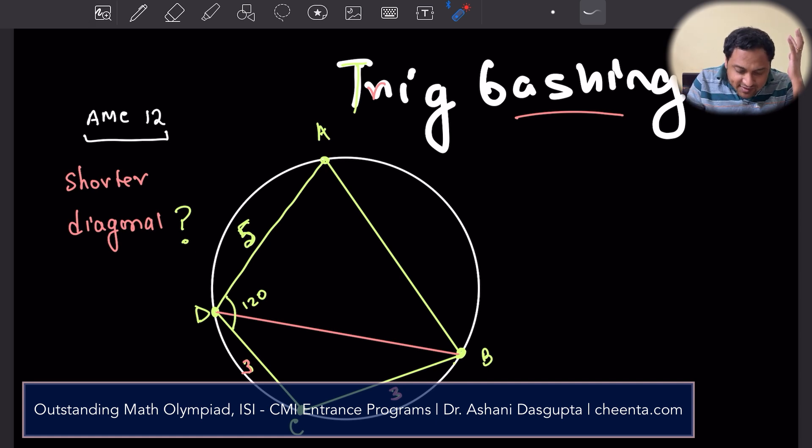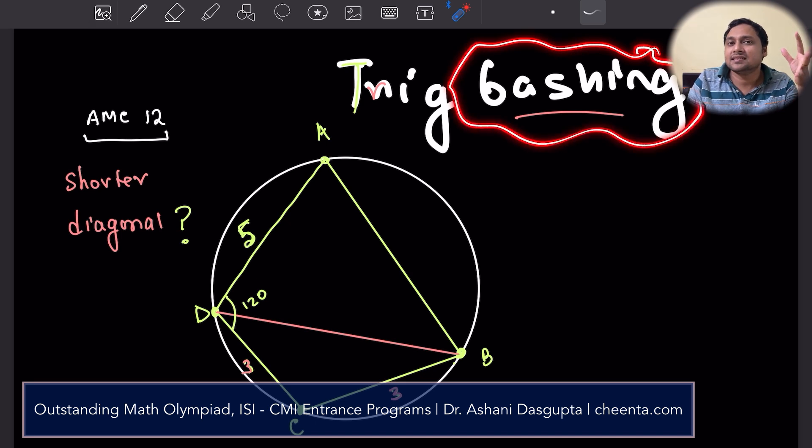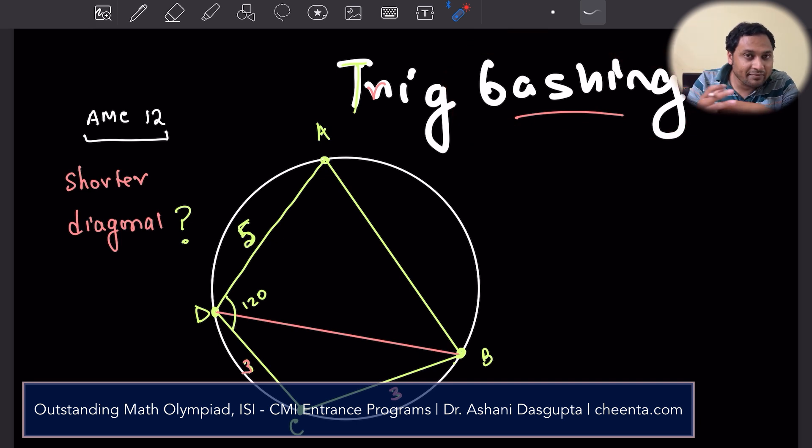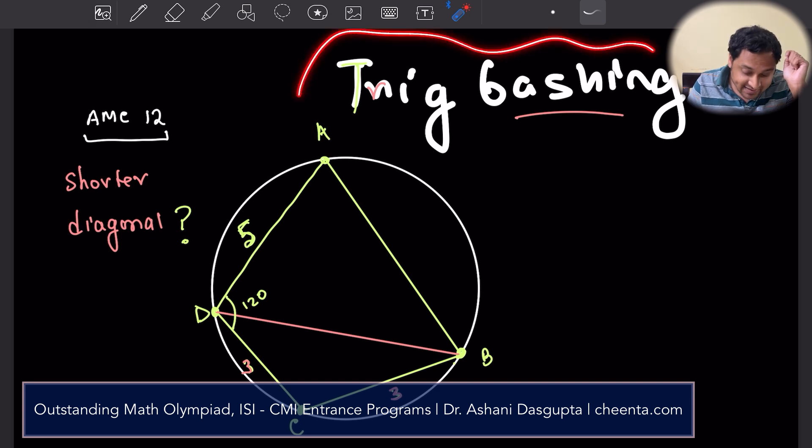Now, whenever you see the word bashing, what it essentially means is you have to use tools and formulas and techniques from that area of mathematics quite intensely, with a lot of calculations in most cases, to finally solve the problem. Now, I personally do not like bashing that much because I prefer intuitive problems. I love problems which can be solved using very little tools. But in certain situations, these can be very handy. So let's see what problem is this.